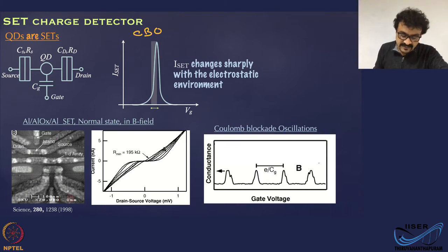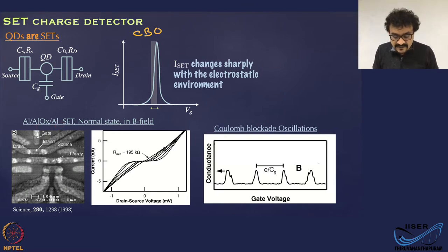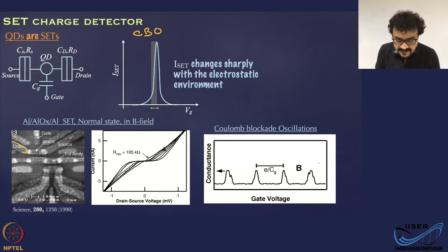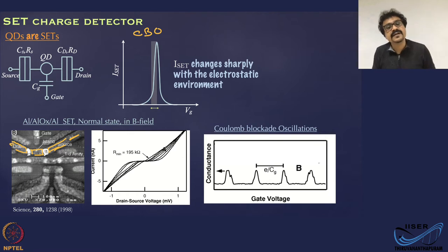Here is an SEM micrograph — a scanning electron microscope picture — of an aluminum, aluminum oxide, aluminum tunnel junction system, or single electron transistor, which is turned to normal state by the application of a magnetic field. This system shown here is a single electron transistor where we have two tunnel junctions — one here and one here — connected to the source and drain region, and you have the small island in the middle, which is the quantum dot.